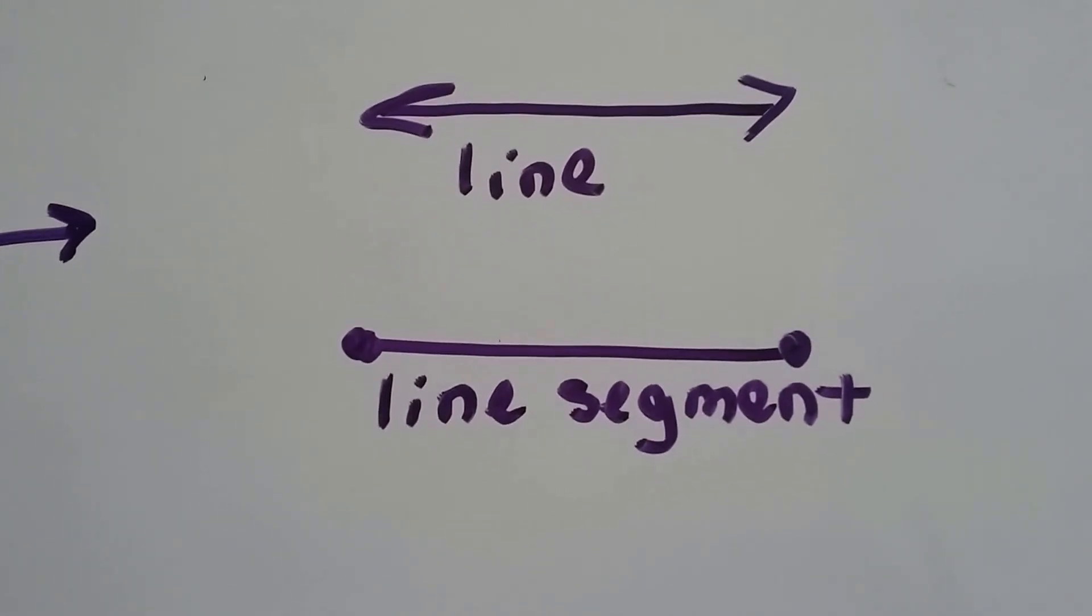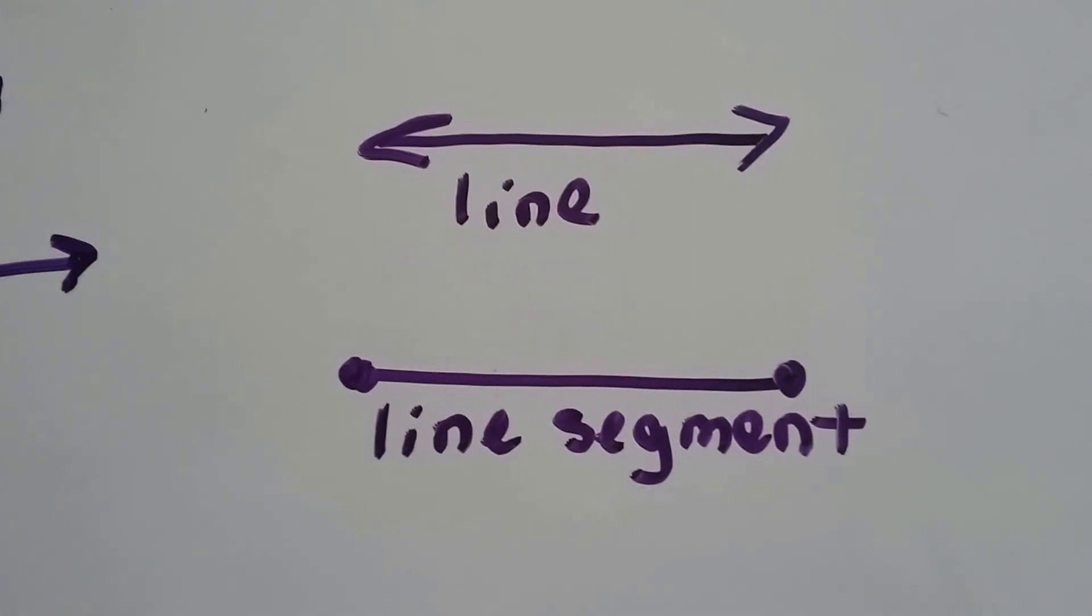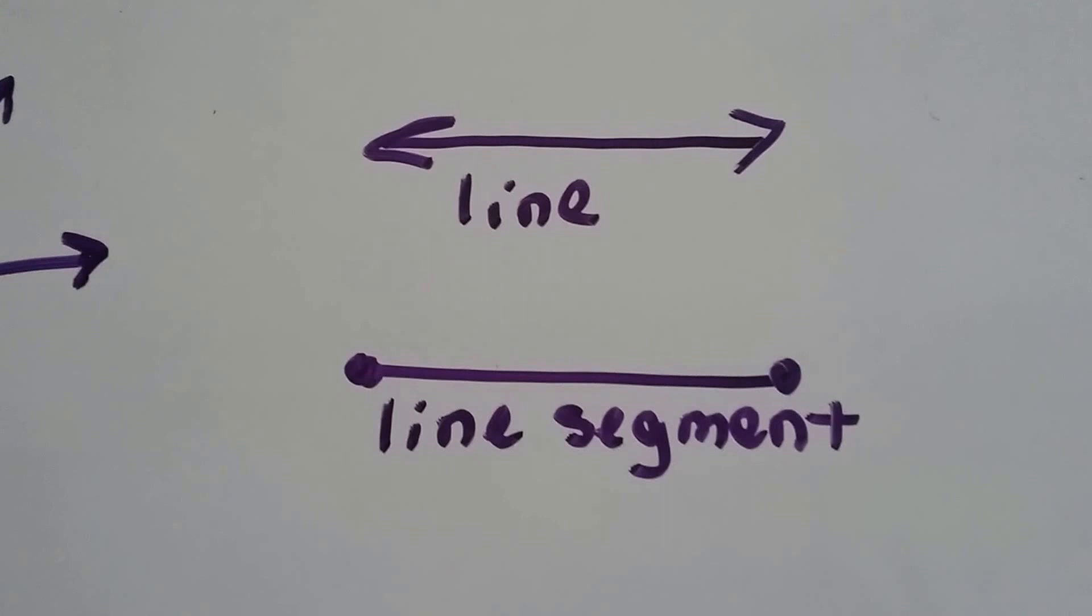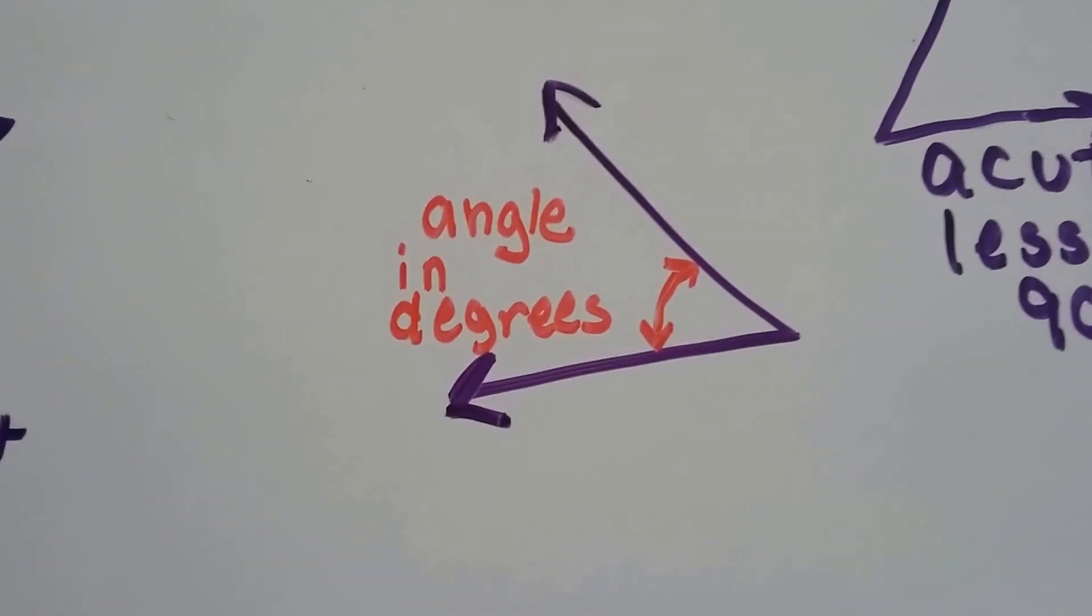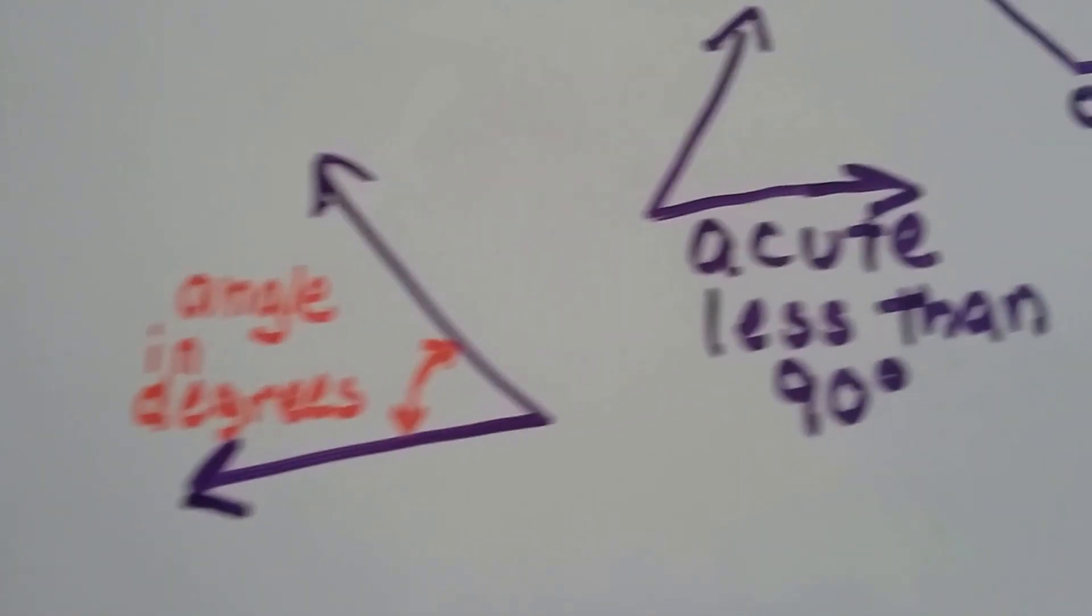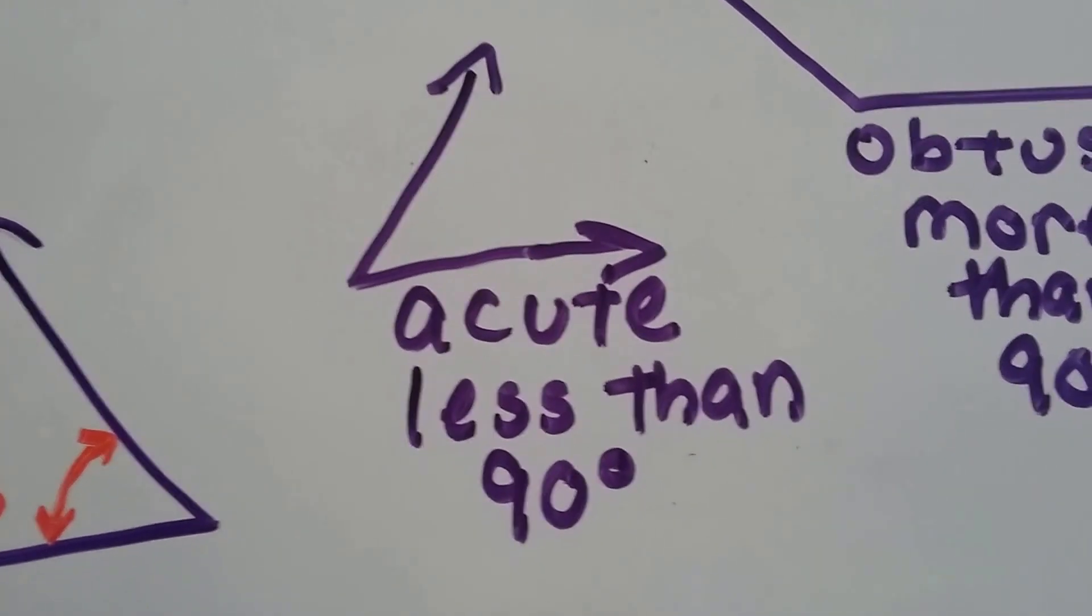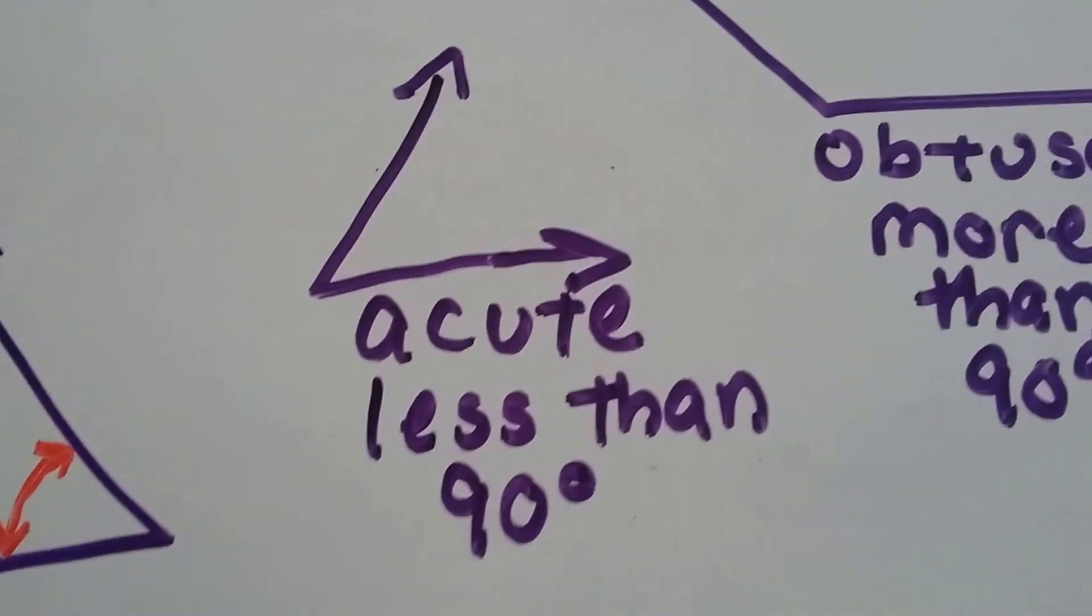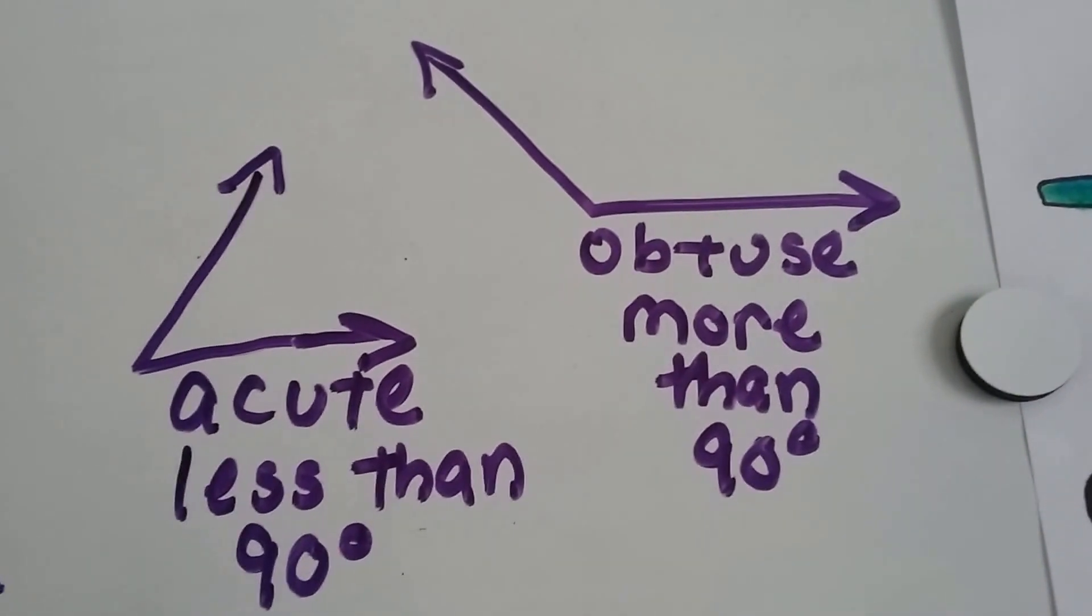The line segment has a start and a finish to it, and it's a certain length. The line that has the arrows can go on for infinity in each side. The inside of the angle is where you measure the angle in degrees. An angle that is not a right angle, it's smaller than 90 degrees, is an acute angle. And if it's larger than 90 degrees, it's an obtuse angle.